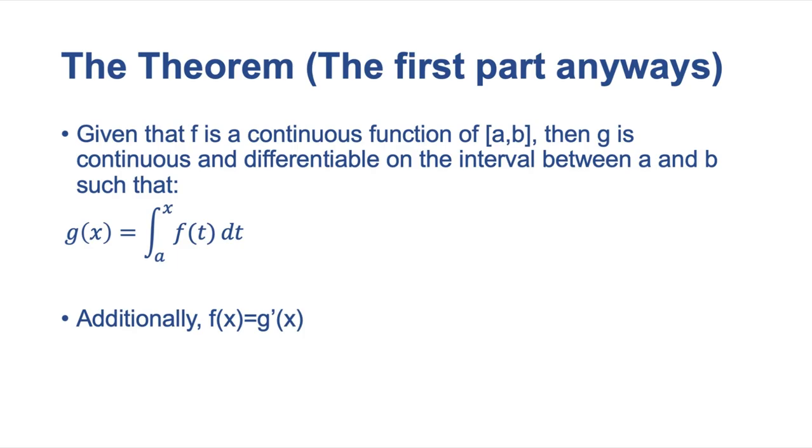So g(x) is defined as a function. If we know f is continuous, then we know that g is going to be continuous and differentiable on the interval between a and b. So what this actually entails, and we're going to talk about this even more in the next video, is that f(x) here is going to be equal to g'(x). So if I differentiate this g(x) here, I'm going to get this function. Well, when I plug in x, I'll get that function. So that's really important.